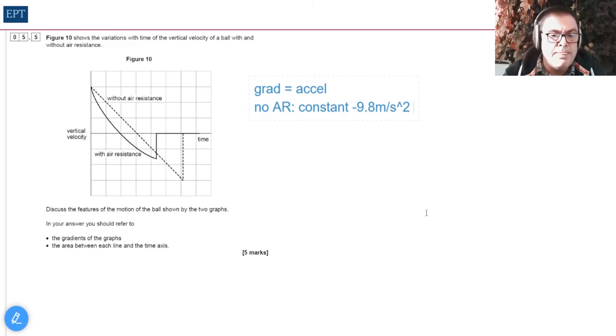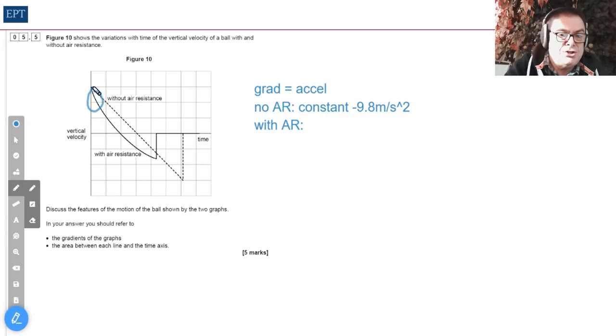That's a constant value of 9.8. What about for the ball with air resistance? As you might expect, this is a lot more complicated. At first, you can see for the first section of the graph that the gradient is steeper. Here we can see that towards the end, the gradient is less. We'll come back to the point in the middle because there's a lot of points you can make about this.